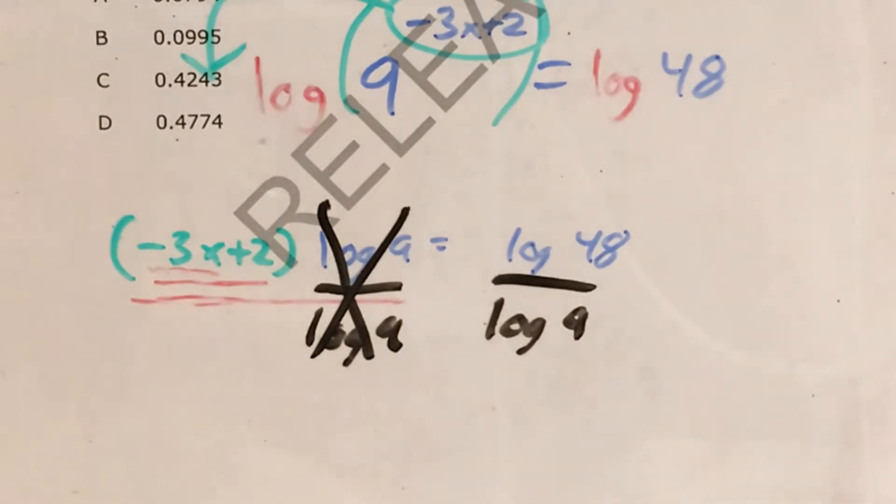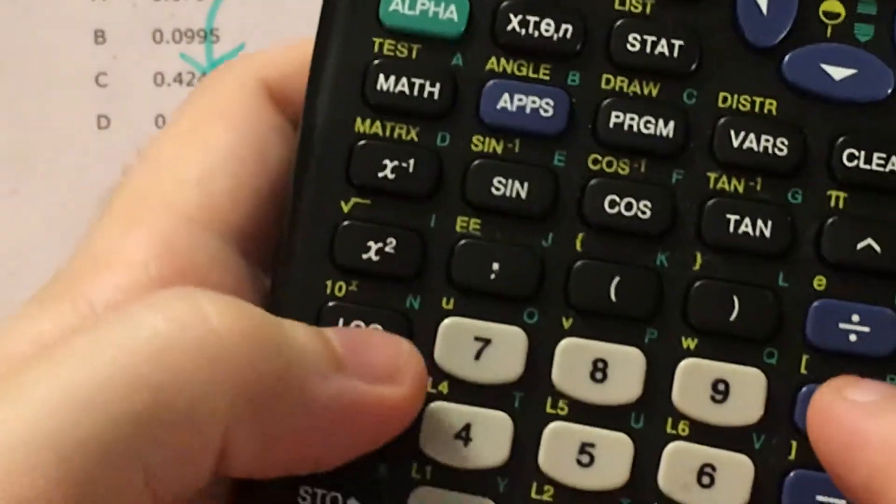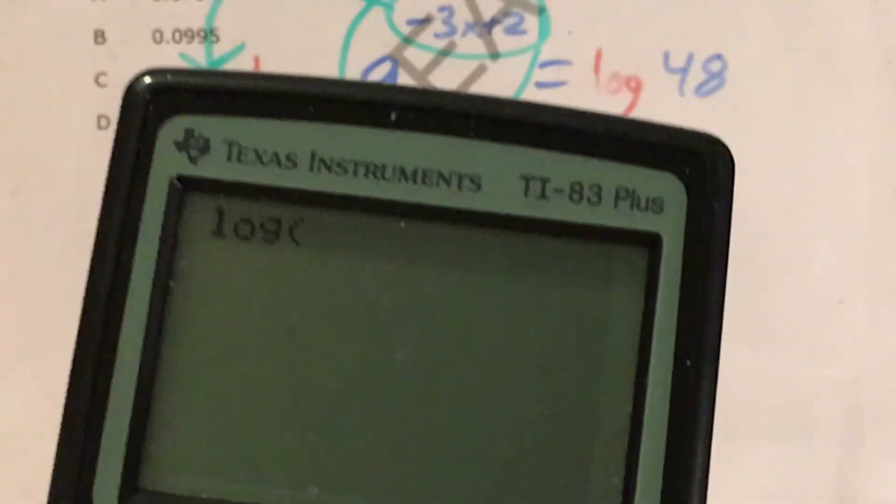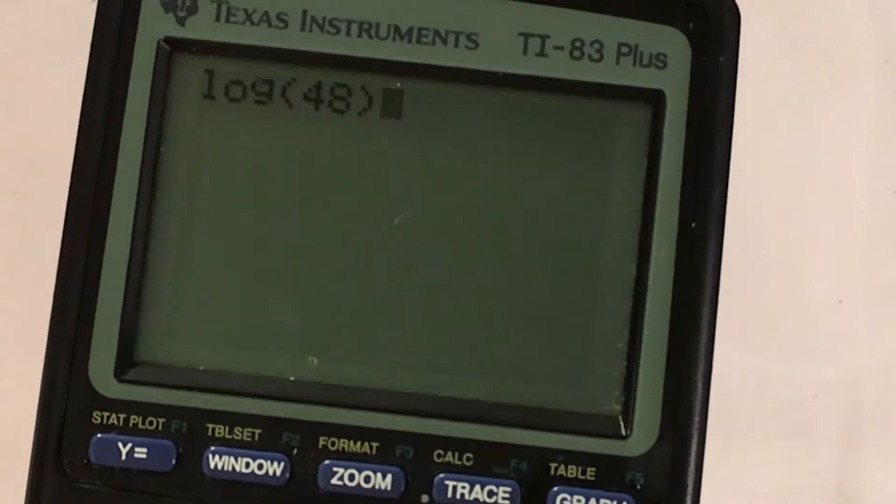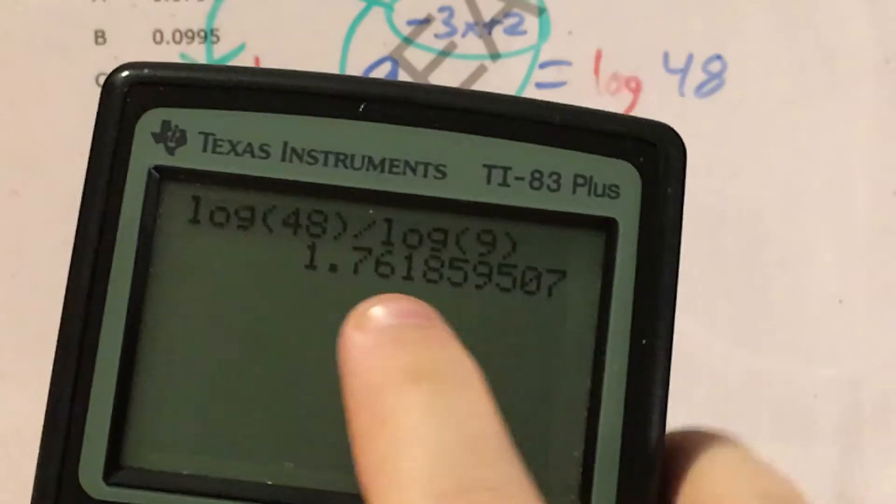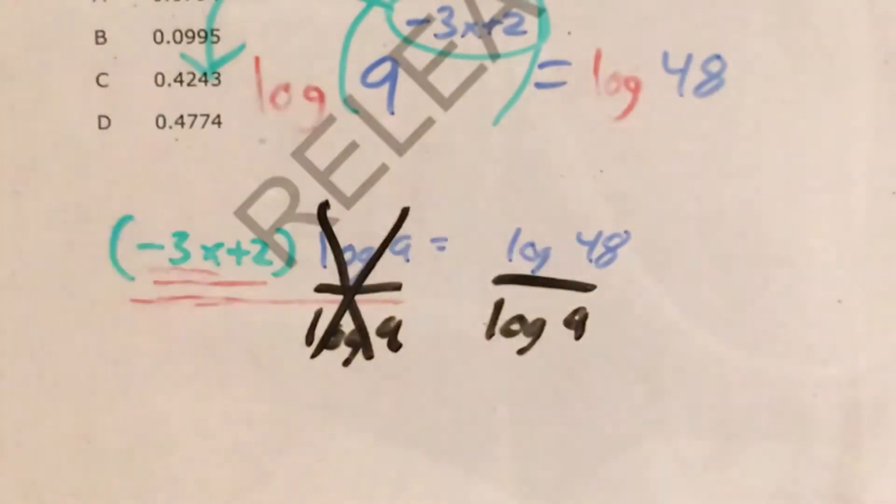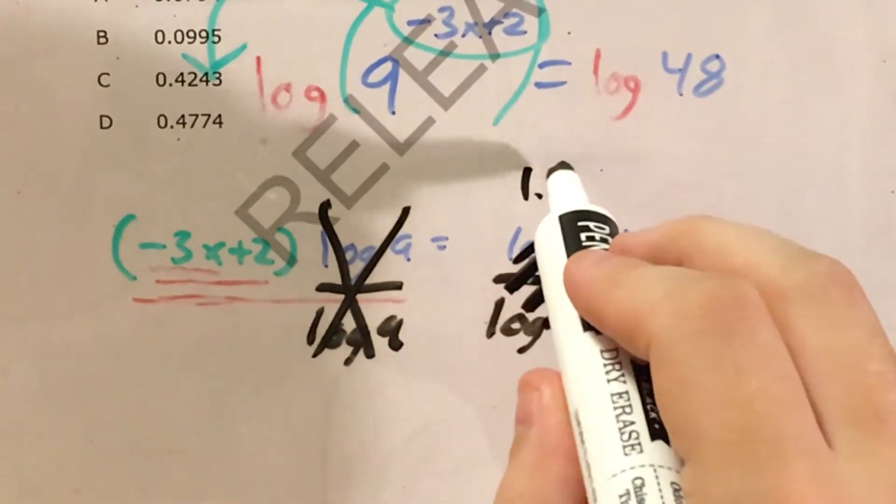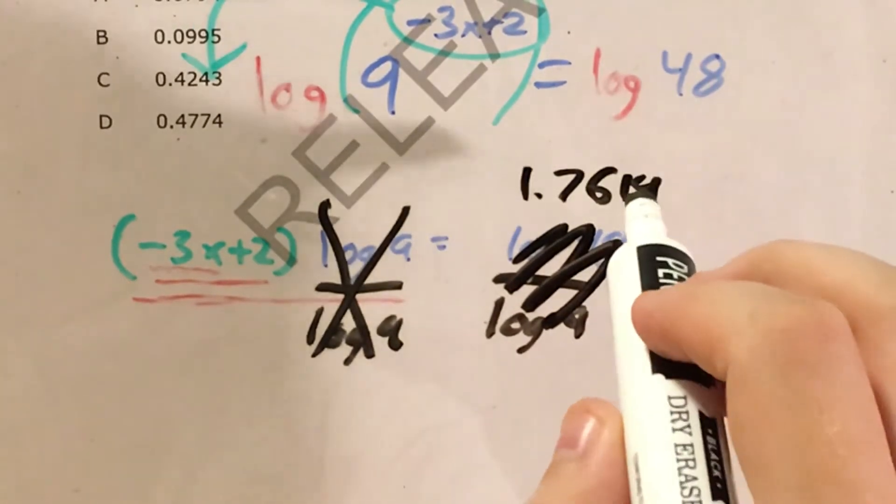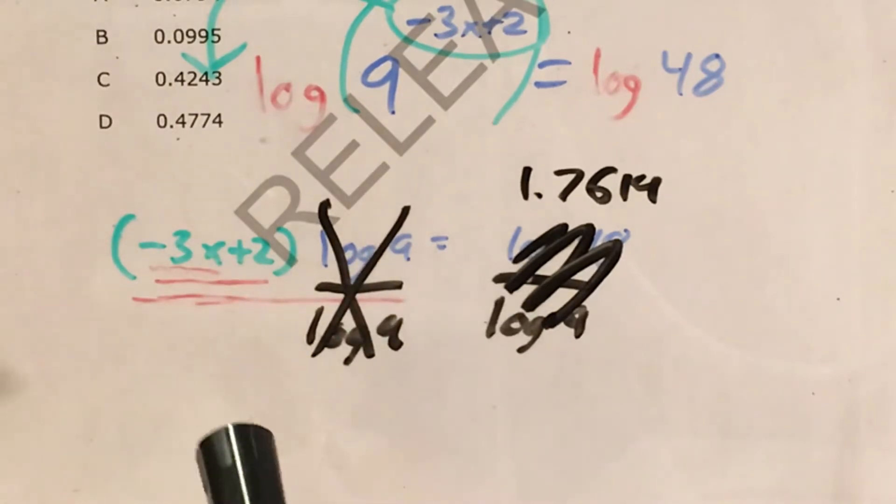If I can get that to maybe four decimal places because that's how many decimal places all my answer choices are in, we should be okay. So log, my log button is down here, log 48, I close my parentheses, I need to remember to do that, divided by log 9. This gets me to 1.7619 because the five rounds up. So this equals 1.7619.